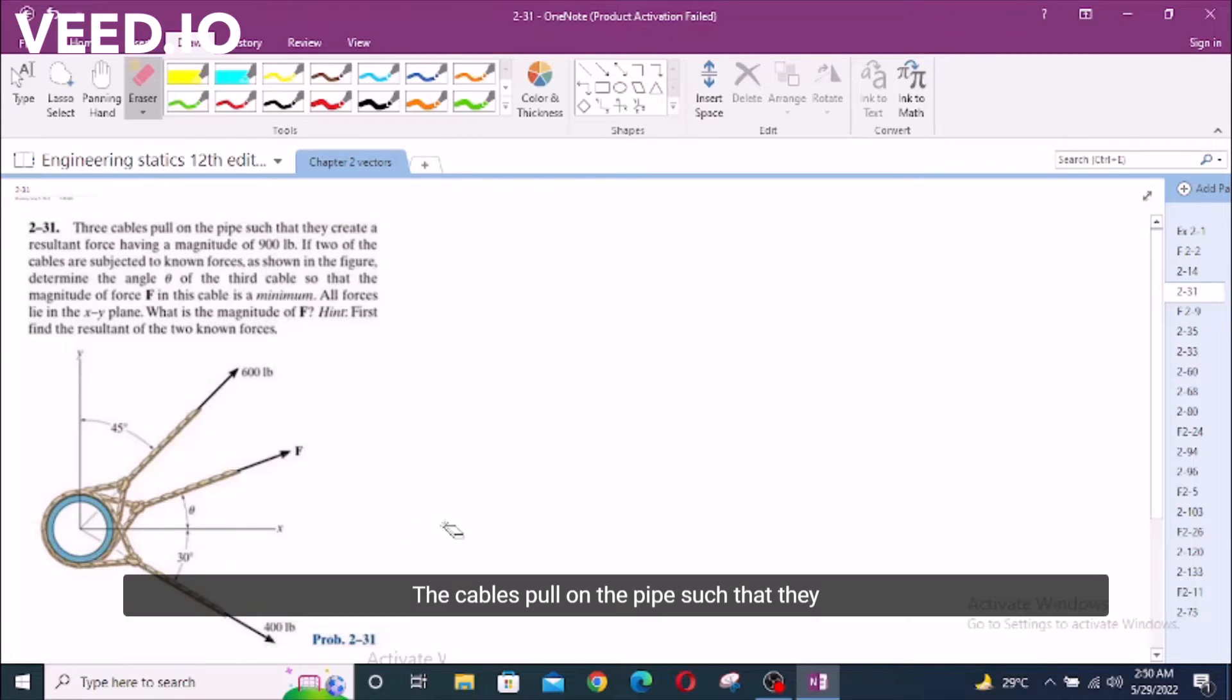According to the problem, three cables pull on the pipe such that they create a resultant force having a magnitude of 900 Lb. Two of the cables are subjected to known forces as shown in the figure. To determine the angle theta of the third cable so that the magnitude of force F in this cable is a minimum. All forces lie in the x-y plane. What is the magnitude of F?